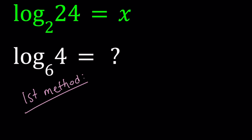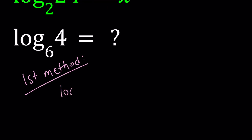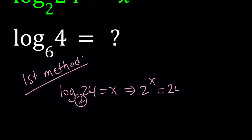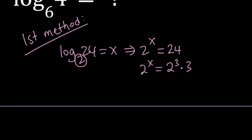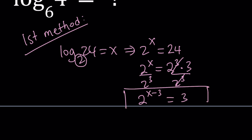I'm going to rewrite the first equation. By using the definition of logs, since 2 is the base, I can write this as 2 to the power x equals 24. Now 24 can be written as 2 to the third power multiplied by 3. We divide both sides by 2 to the third power to isolate the 3, giving us 2 to the power x minus 3 equals 3.